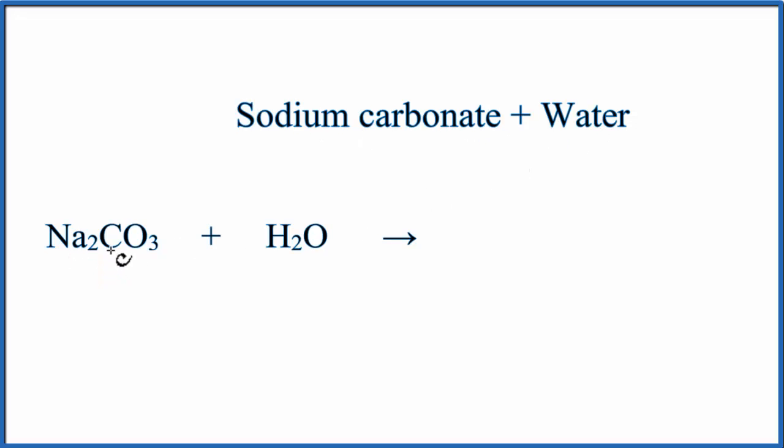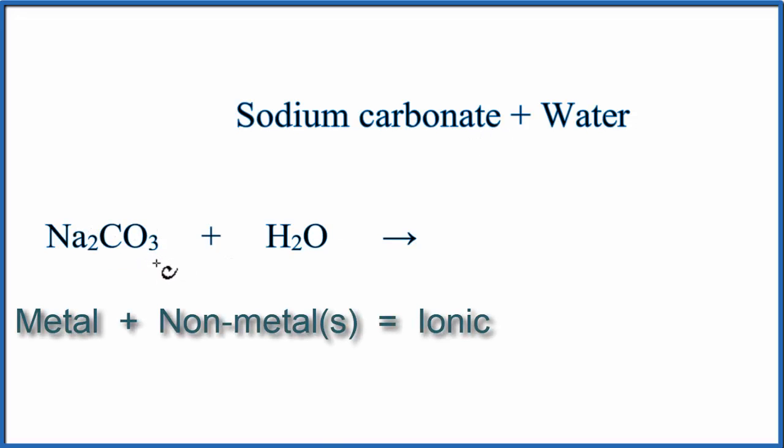Sodium is a metal, and then C and O, those are non-metals. In fact, they're a group of non-metals called a polyatomic ion. We call it the carbonate ion. So when we have a metal and non-metals, we have an ionic compound.